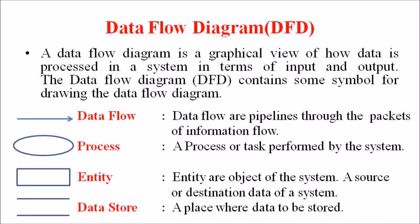The third symbol is the entity. Entities are objects of the system — a source or destination of data — and may be beginning or end users. Entities are represented by a rectangle. The fourth symbol is the data store, a place where data is stored, such as files or databases, represented by two parallel lines.